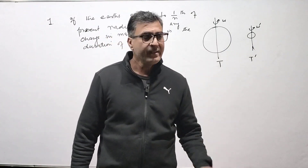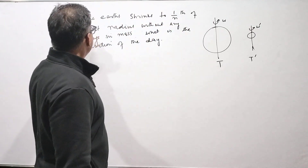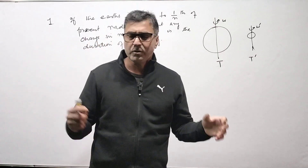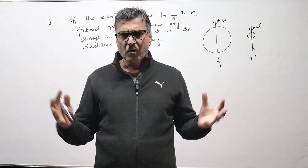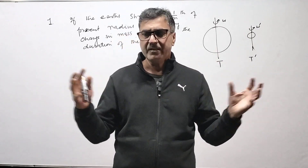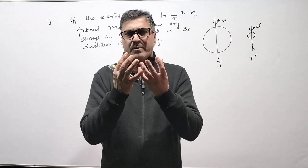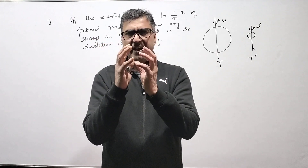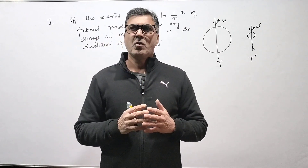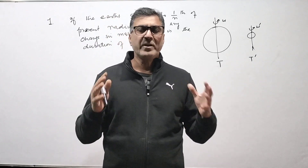Here is the first question: if the Earth shrinks to one-tenth of its present radius without any change in mass, what is the duration of the day? We have to imagine the Earth shrinking spontaneously, not by any external agent. In that situation, there is no external torque, so the angular momentum of the Earth must remain constant.